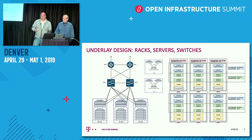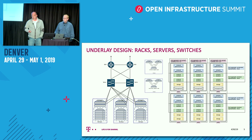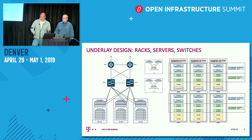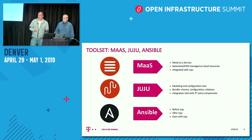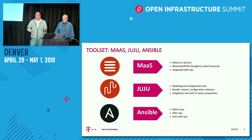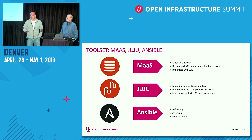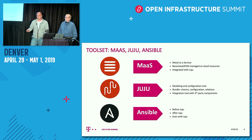We started with the underlying design — we do the rack design, server design, and switch design ourselves. As you can see on the right side, we provide availability zones and host aggregates, including the accelerated host aggregate type. We use the Canonical tool set for different purposes: MAAS for Metal as a Service, usually for provisioning our infrastructure, and Ansible for configuration management, along with Juju for various orchestration scenarios.